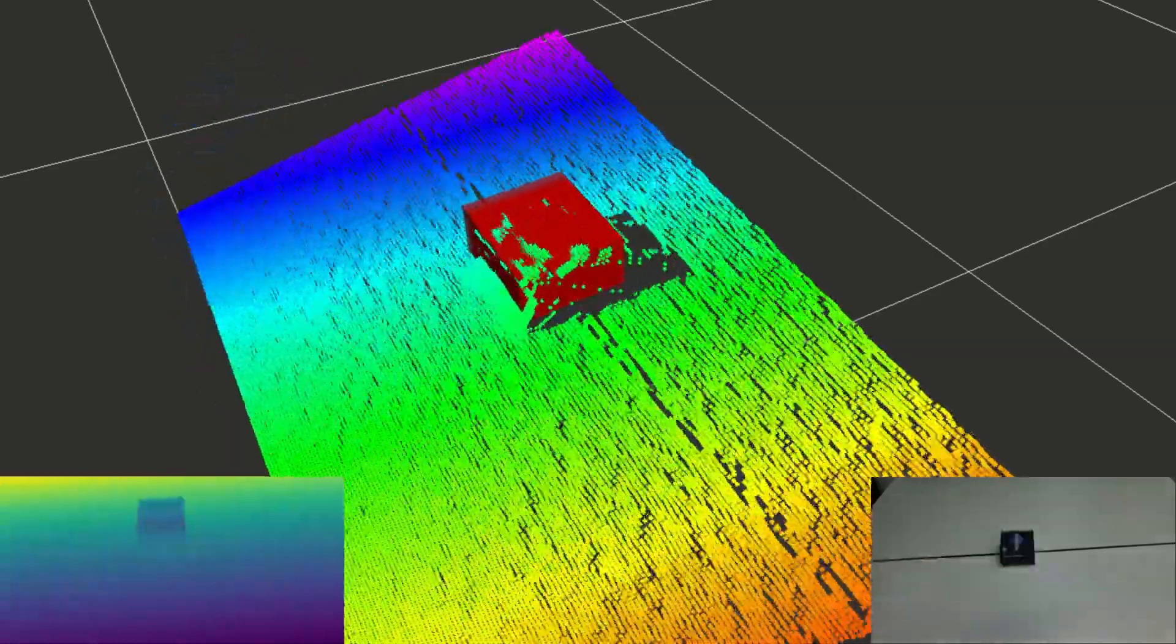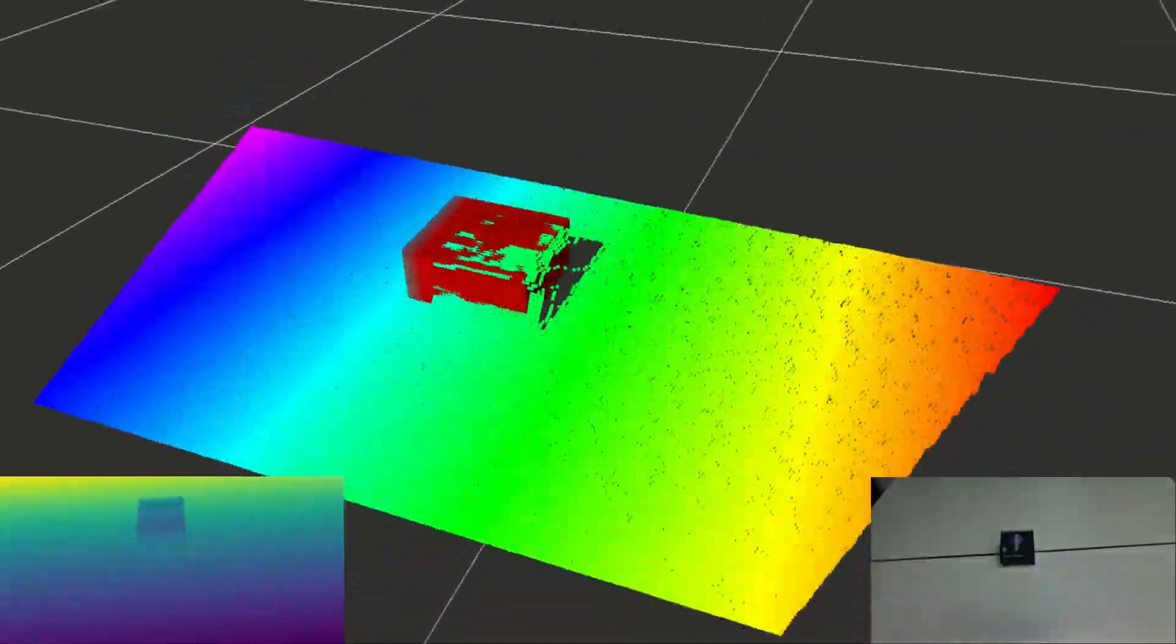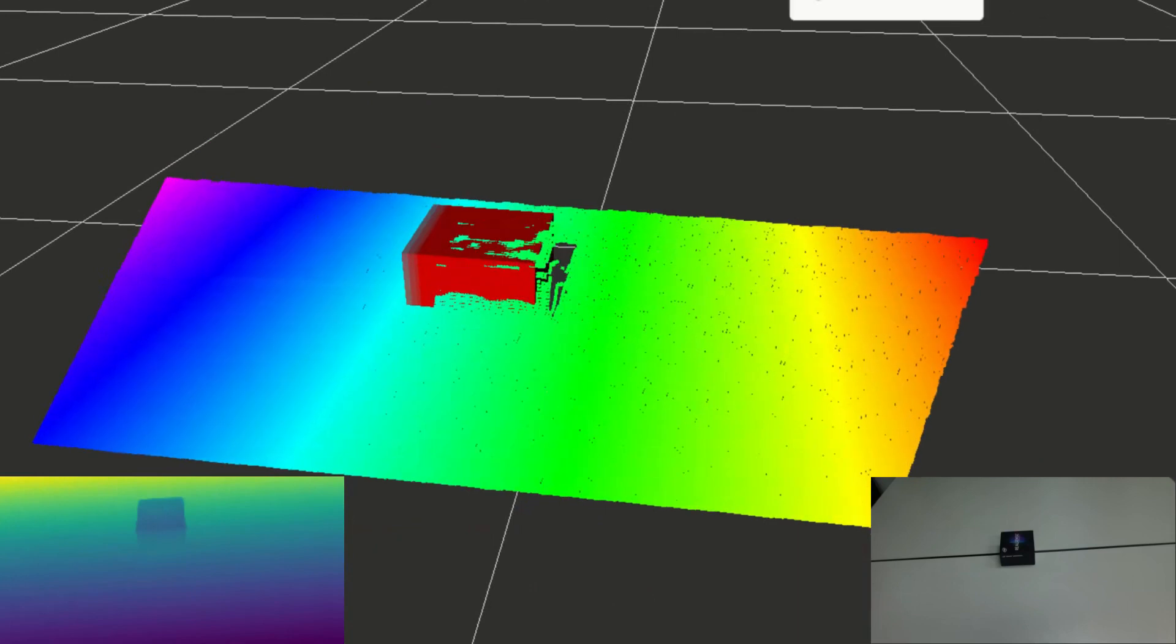After removing the second obstacle, the target object becomes visible. The particle filter quickly converges to the ground truth state.